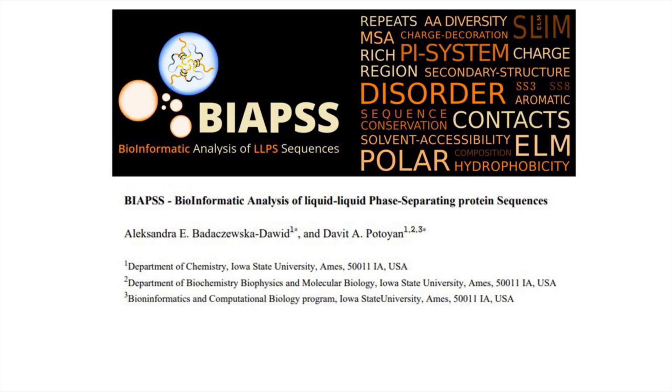The kind of skills that students learn while working on computational projects include how to code, how to write scientific code, how to analyze data, and how to do statistical tests on data. These skills can be applied to a wide range of industrial projects.